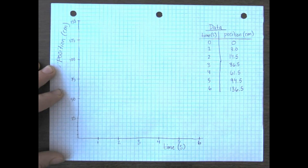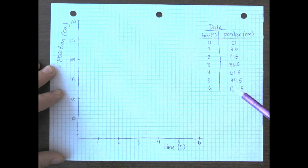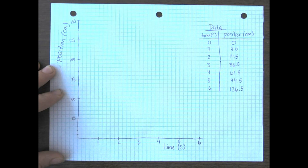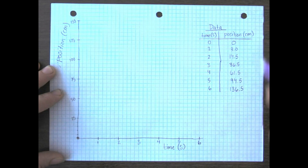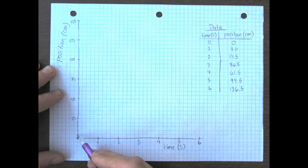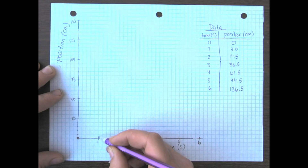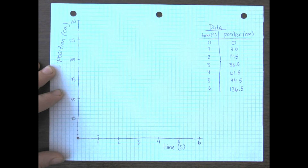Now we've got a great graph. It covers all the way up to six seconds and all the way up to 150, so that's in our range of 136. Now we're going to plot all these points. Our first point is at zero time, zero seconds. At one second, we're going to be at three centimeters — remember this is five, so we go up just a little over halfway and make our dot there.